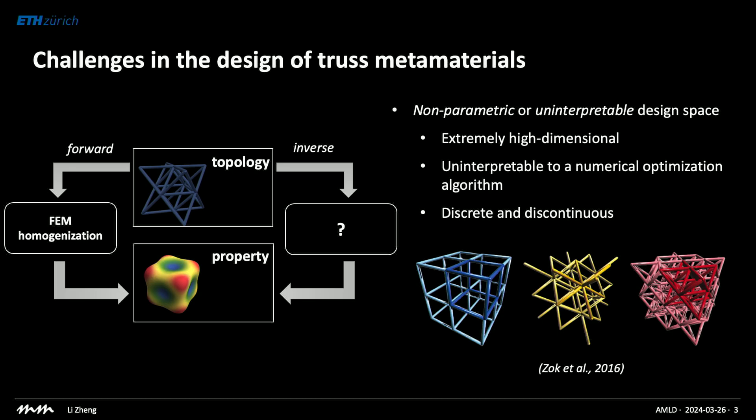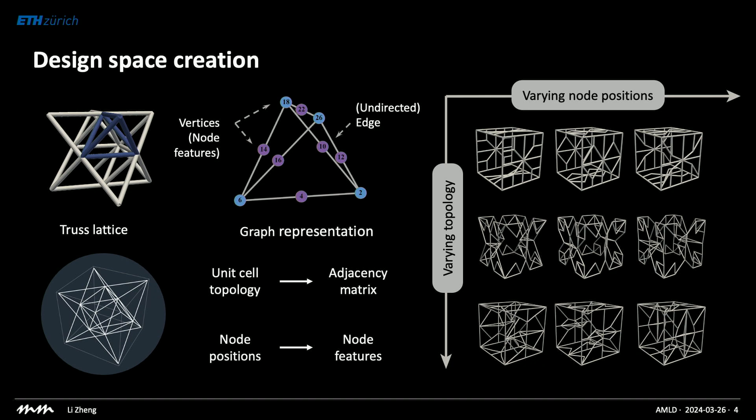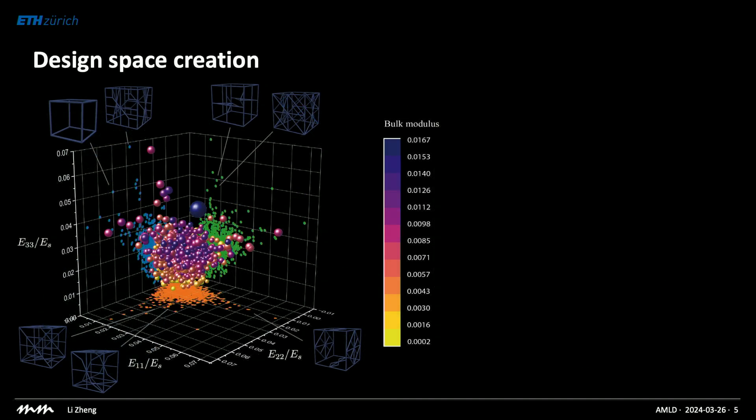One of the main challenges in designing truss-based metamaterials is how to explore such a vast and discrete design space. What we do here is formulate the truss structure as a graph with nodes and connections. We define the nodes and connect them in all kinds of different ways, giving rise to a broad range of truss structures with different properties. However, the design space remains highly dimensional and discrete, becoming very complicated as the number of discrete elements and possible combinations increases.